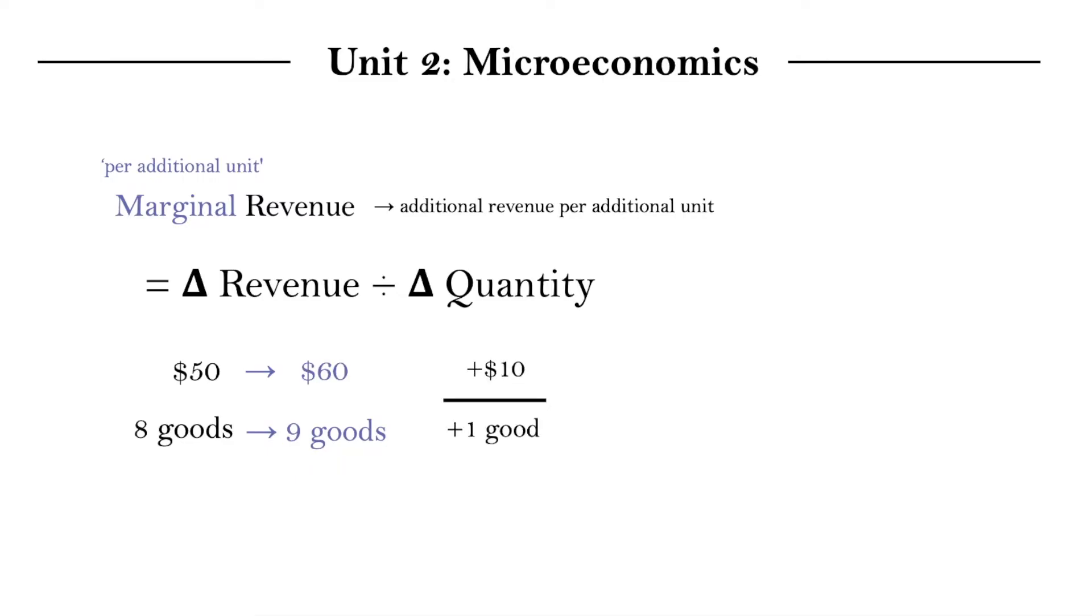And we also have marginal revenue, which remember that marginal is just like the phrase per additional unit, which means it just refers to how much more revenue did the next unit sold bring in. If we were to calculate it, we would do change in revenue divided by change in quantity. So if your revenue was $50 selling 8 goods, and when you sell your 9th good and get a total revenue of $60, your marginal revenue for that 9th good would be $10.